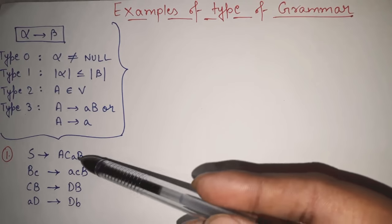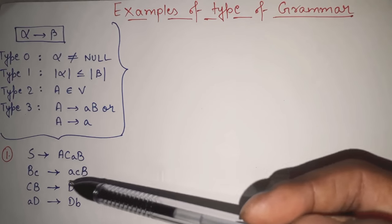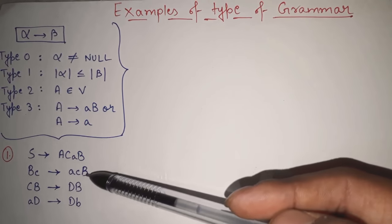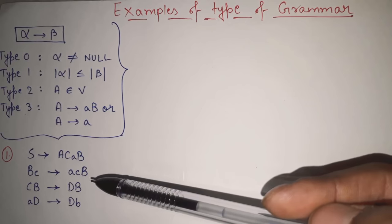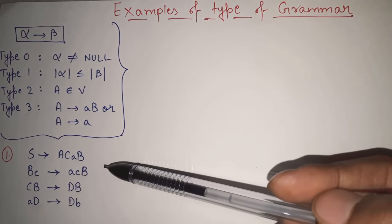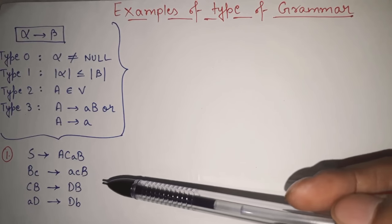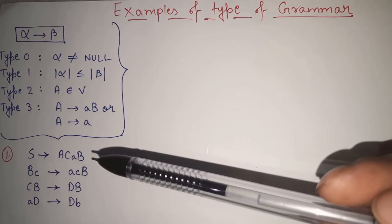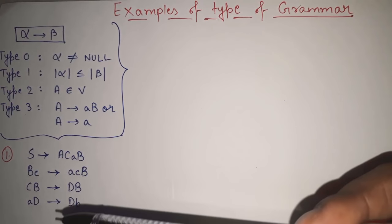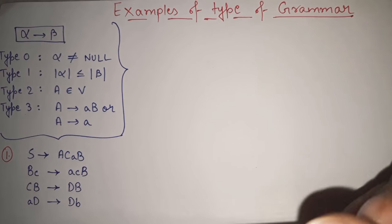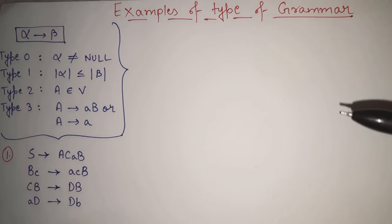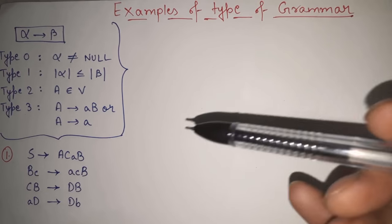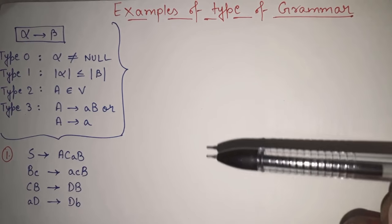Means, if any context free grammar is given to us, then by seeing the grammar, how we can identify what is the type of that grammar. Please visit that video first so that you will get this video more clearly.